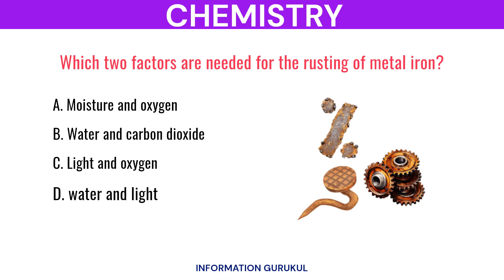Which two factors are needed for the rusting of metal iron? Moisture and oxygen.